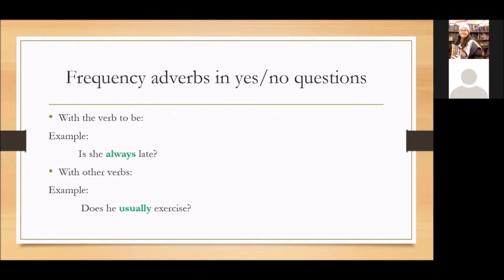Finally, we are going to learn how to create yes/no questions with frequency adverbs. With the verb to be, the structure is: the verb to be, the subject, the frequency adverb, and the rest of the sentence. Example: Is she always late? And with other verbs, the structure is: the auxiliary, the subject, the frequency adverb, and the verb. For example: Does he usually exercise?